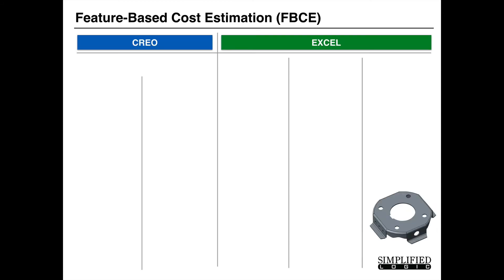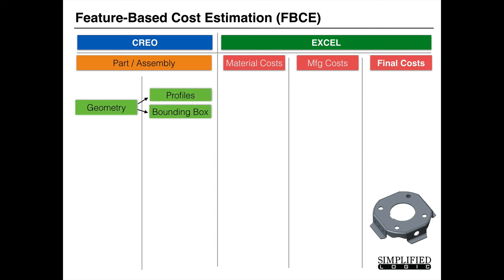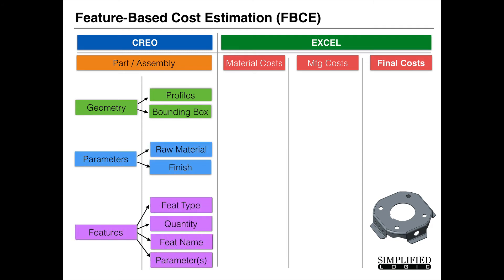When you're doing feature-based cost estimation with NitroCell, these are really the key areas that you need. You need a Creo part or assembly, and you also need an Excel model of what your material costs and manufacturing costs are to produce your final costs. From the Creo model, you're going to extract things like the geometry, things specific to the geometry like profiles, bounding boxes, the parameters, and any feature types, names, quantities, or parameters that they may contain.